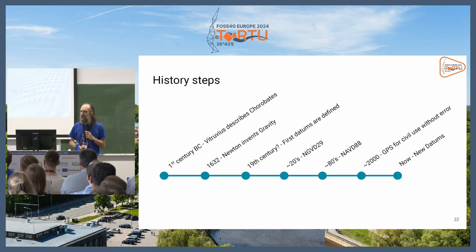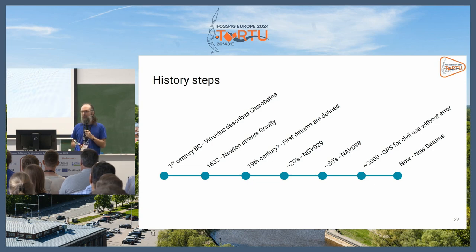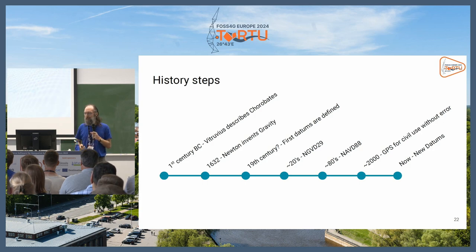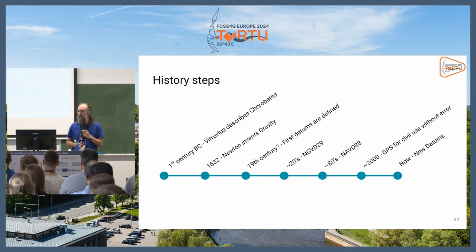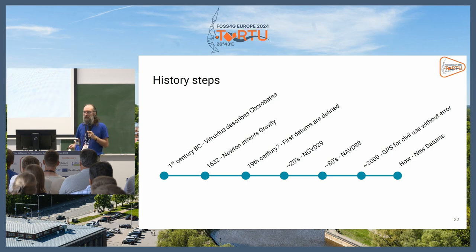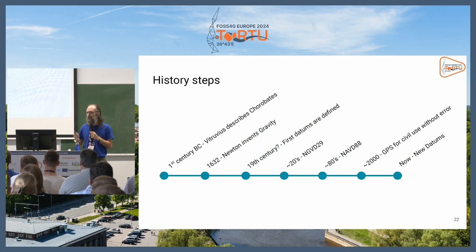Let me review how we got here. Already in the first century BC, Vitruvius was describing the Chorobates device and they were building aqueducts. In the 17th century, Newton was talking about gravity. In the 19th century, we have the first vertical datums. There are two examples of vertical coordinate reference systems in the US: NGVD-29 from the 1920s and NGVD-88 from the 1980s. Then in the 2000s, GPS became available for civil use without the intentional error added by the military, which was really helpful. Now there are many new datums being created, including one the US is releasing next year.